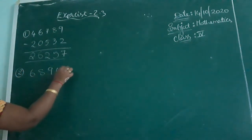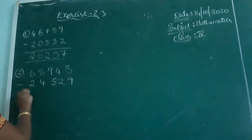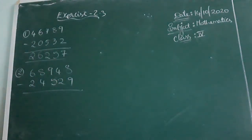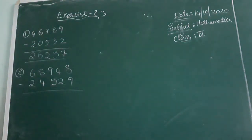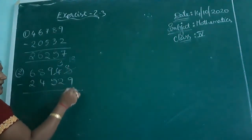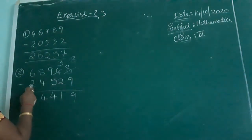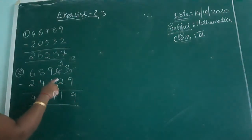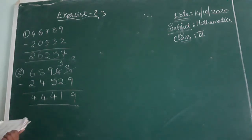68,948 minus 24,559. See, let us learn about it. 8 minus 9 — is it possible? No. So you have to borrow from the before number. Now it becomes 4 minus 1, which is 3. This number becomes 10 plus 8, which is 18. 18 minus 9 is 9. 3 minus 2 is 1. 9 minus 5 is 4. 8 minus 4 is 4. 6 minus 2, no need to borrow here. If borrowing comes, by that time you have to borrow from the next number.